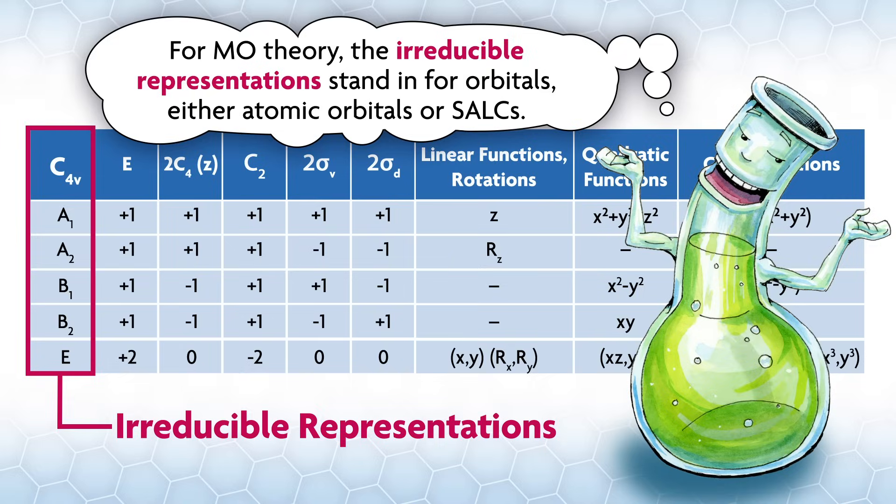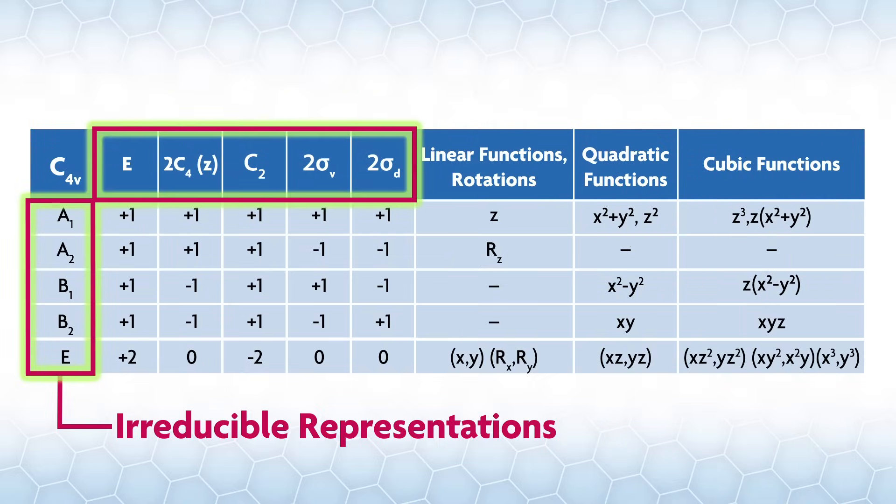A couple of things about irreducible reps. All character tables are square matrices. There are just as many irreducible reps along the left side as there are classes across the top. Irreducible reps can have different numbers of dimensions - things they represent. For three-dimensional objects, the irreducible reps will generally be 1, 2, or 3D.